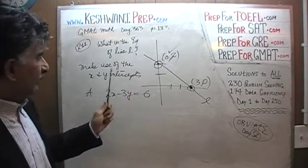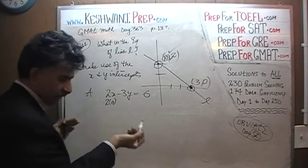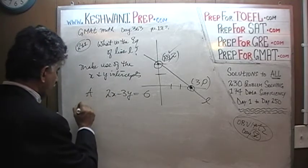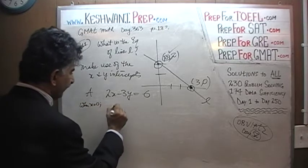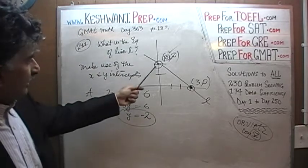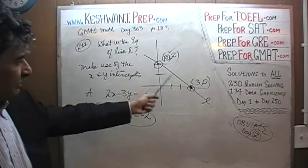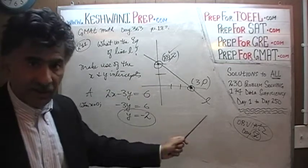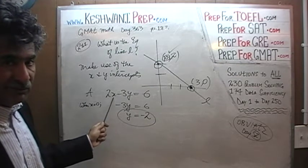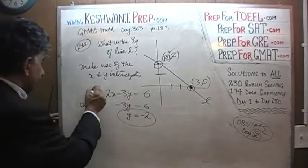Replace x with 0 here. This 2 times 0 is 0 and goes away. When x is equal to 0, what we get is negative 3y equals 6, and that means y would have to equal negative 2. Y does not equal negative 2 — when x is equal to 0, y equals 2. This equation does not depict this line. This equation would have told us that when we replace x with 0, y works out to be positive 2, but it gives negative 2. A is not the answer.